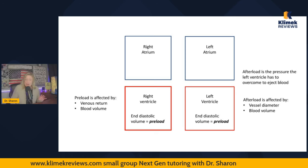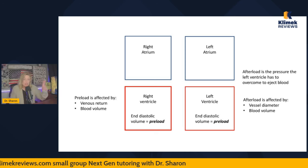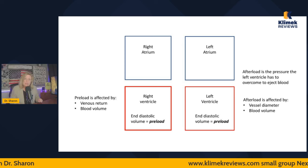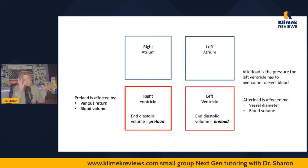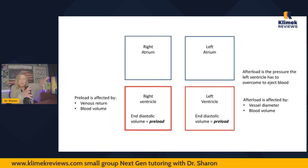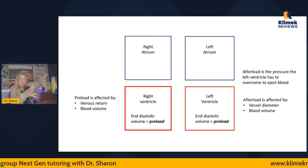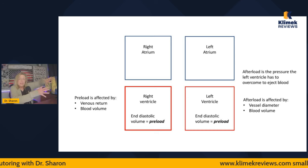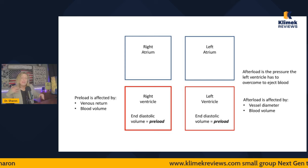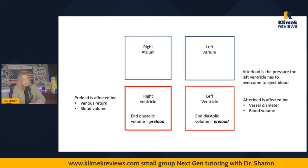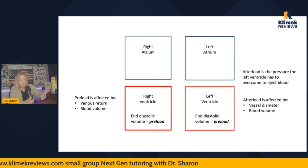If a patient is hemorrhaging or dehydrated, preload is going down and afterload is going down. If they're fluid volume overloaded, it depends — if the fluid is backing up into their lungs, jugular vein, and the venous side, then preload is going to go up, but afterload may not. It just depends on whether it's backing up or not.